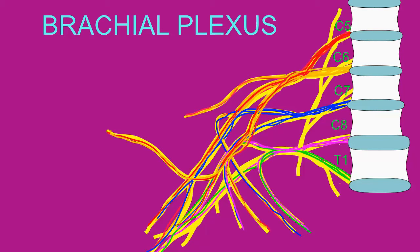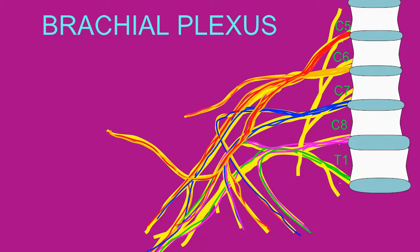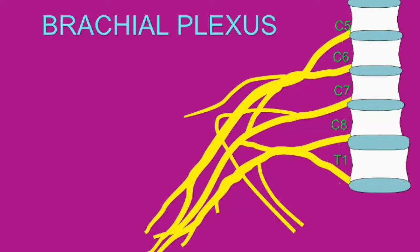These nerves carry fibers from multiple spinal roots. The ventral rami of spinal nerves C5 through T1 interweave to form the brachial plexus, which includes a lateral cord and a medial cord.